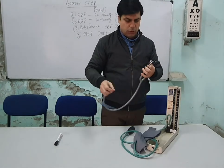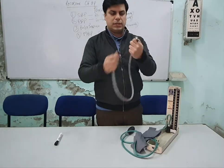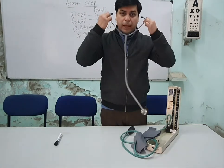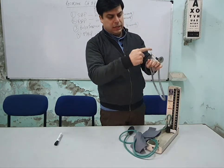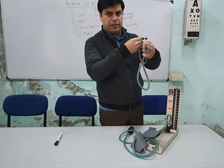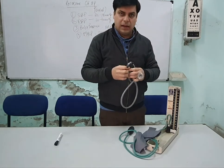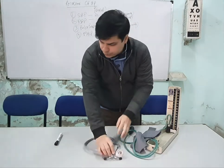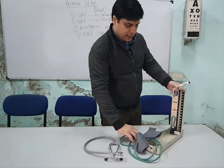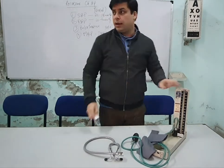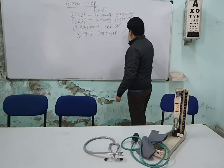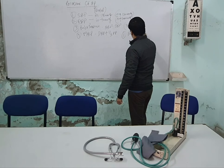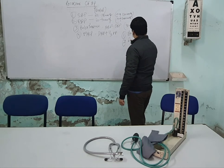The stethoscope earpieces must be inserted in the direction of the auditory canal. Blood pressure is recorded by two methods: number one, the palpatory method, and number two, the auscultatory method. The word palpation refers to touching, while auscultation refers to listening.